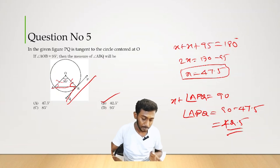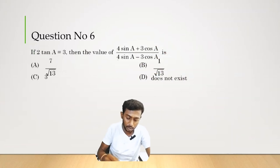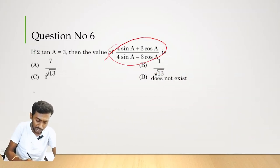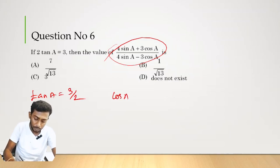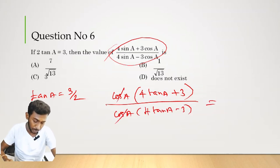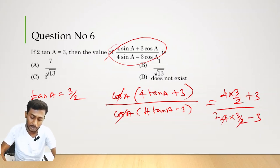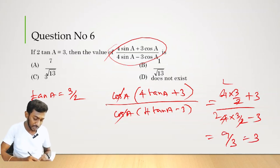Question number 6. If 2 tan A = 3, find the value of the given expression. Substituting the value, the answer works out to 6 + 3 = 9, and 9/3 = 3. Therefore option C is the correct answer.